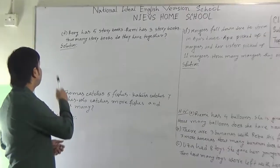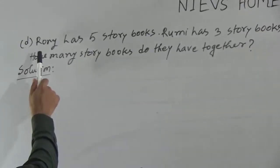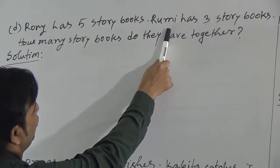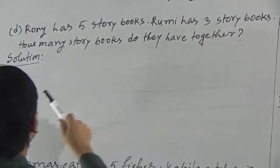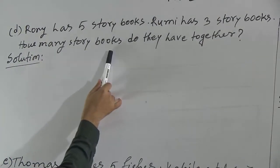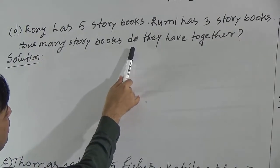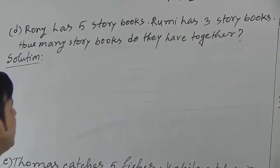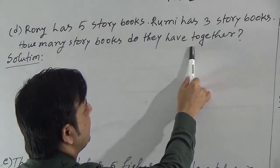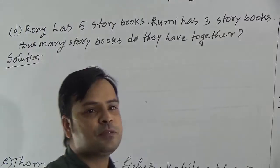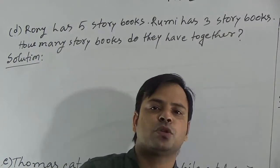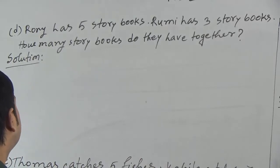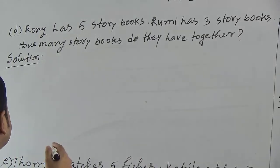Our first question: Ronnie has 5 storybooks. Rumi has 3 storybooks. How many storybooks do they have together? As the word 'together' is here, it means we have to find out the total number of storybooks they have. Let us start.